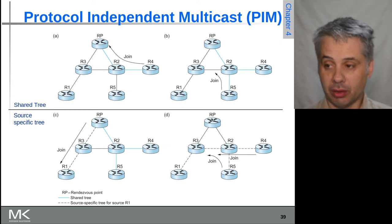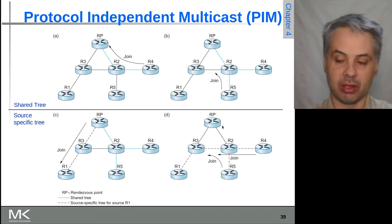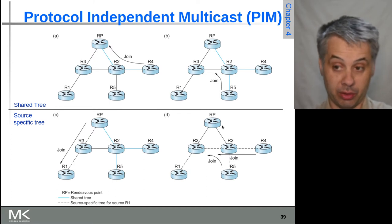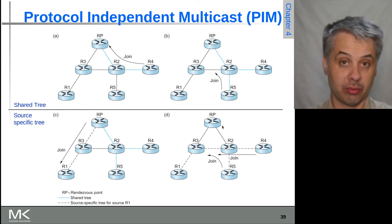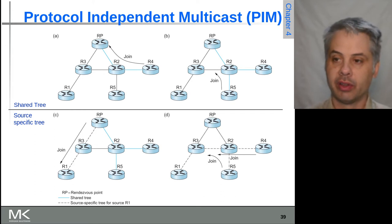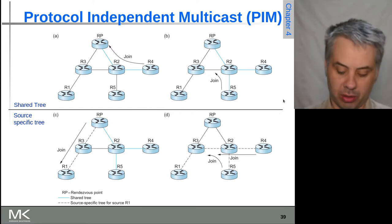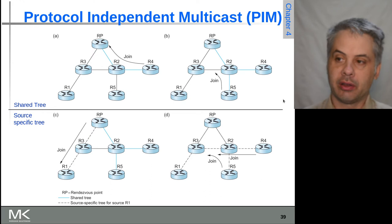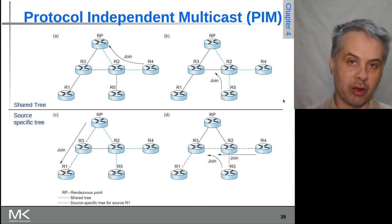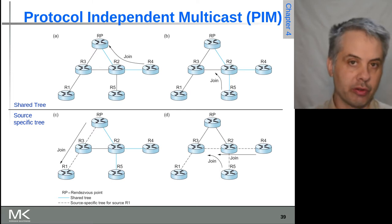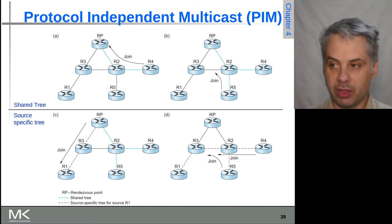R5 might actually go directly to R1 to ask to join the group. Rendezvous points are often high-bandwidth routers in the backbone, and they can either be manually configured or chosen using some other protocol. In many cases, for retail ISPs connecting to a wholesale backbone ISP, the backbone ISP might simply say: I will be your rendezvous point for all multicast traffic to make things more efficient.